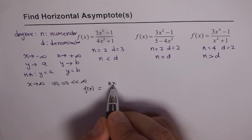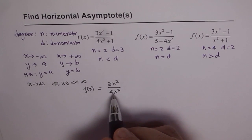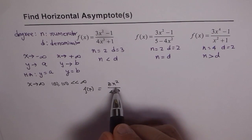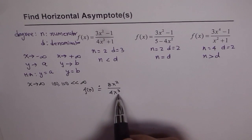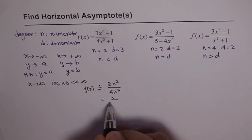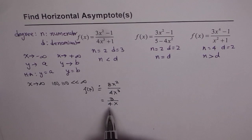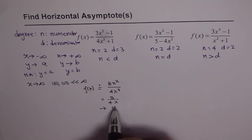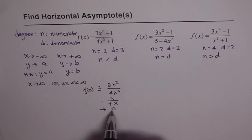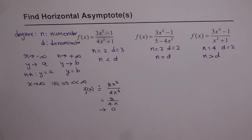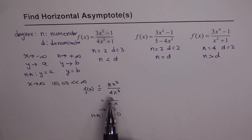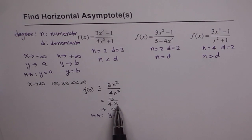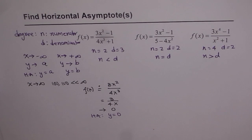In this case we can write this as approximately 3x squared over 4x cubed. The x squared terms cancel, leaving 3 over 4x. If x is very large, this value approaches 0, because something over a very large number approaches 0. Since it approaches 0, we have a horizontal asymptote, and the equation of the horizontal asymptote is y equals 0.